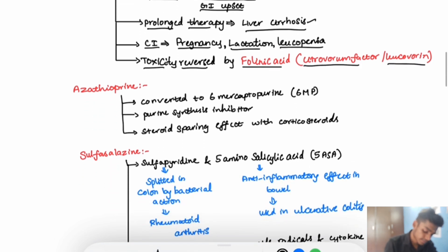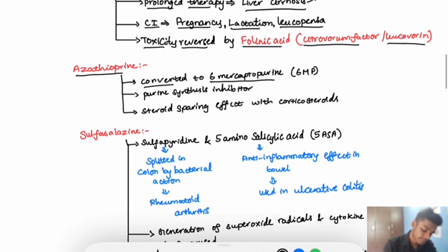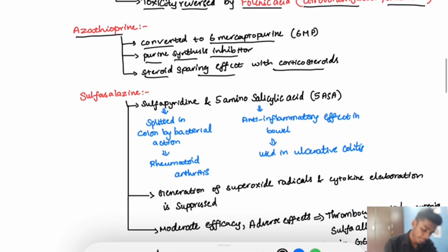Azathioprine is converted to 6-mercaptopurine. It is a purine synthesis inhibitor. Along with steroids, it has a steroid-sparing effect, which is why it is used.